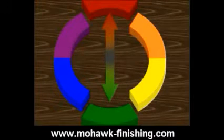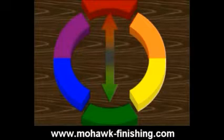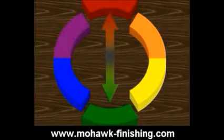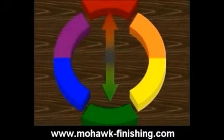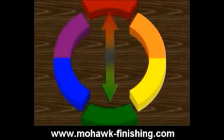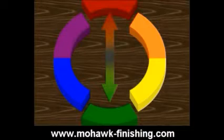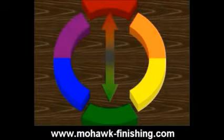Sometimes it's easier to match colors by working with the complementary colors. Complementary colors are located directly opposite each other on the color wheel. For example, the opposite of red is green, so green and red are complementary colors. A very important fact of color theory is that complementary colors reduce the brightness or intensity of each other, because theoretically all colors mixed together end in gray.